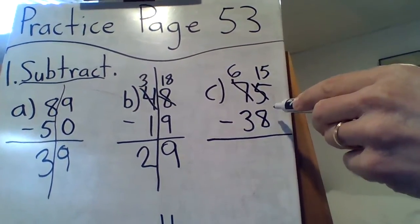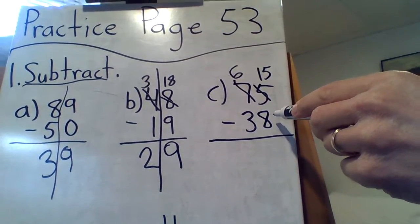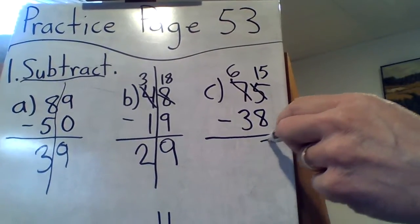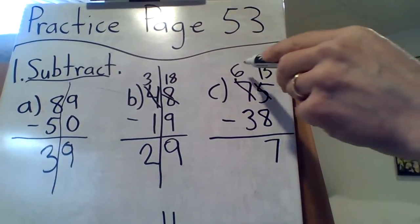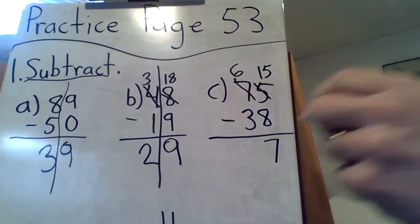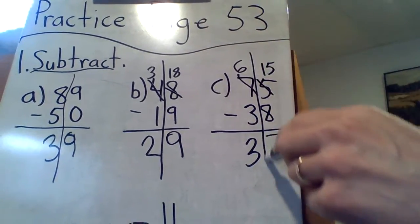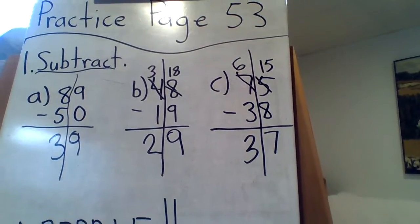15 take away 8. Ooh, almost doubles. If it was 8 and 8, it would be 16, so it must be 7. One less. And 6 minus 3. Ooh, it is doubles. It's 3. There we go. 37. Could separate those. And there we go.